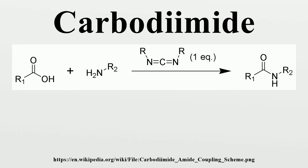Carbidiamide Formation: Carbidiamides are formed by dehydration of urease or from thio-urease. They are also formed by treating organic isocyanates with suitable catalysts. In this process, carbon dioxide evolves from the isocyanate.